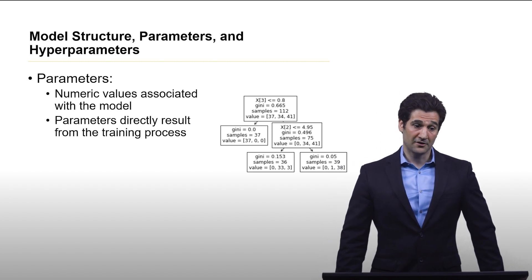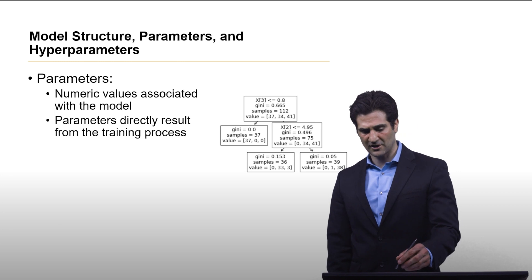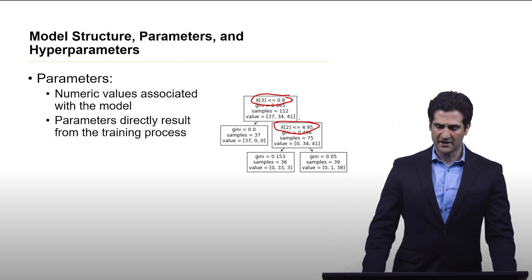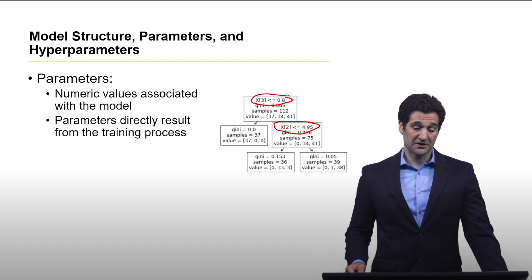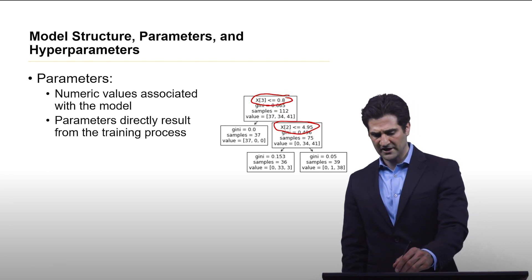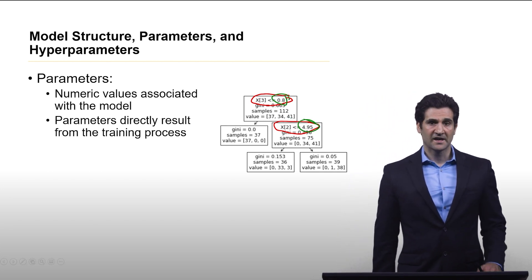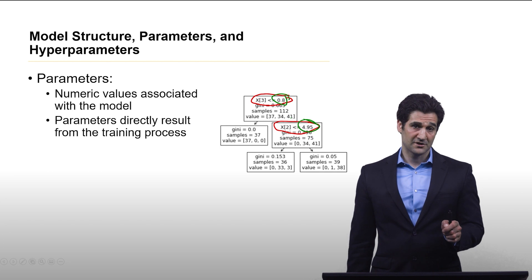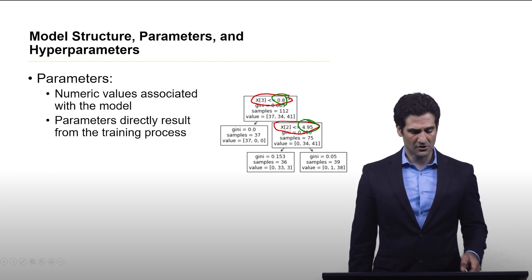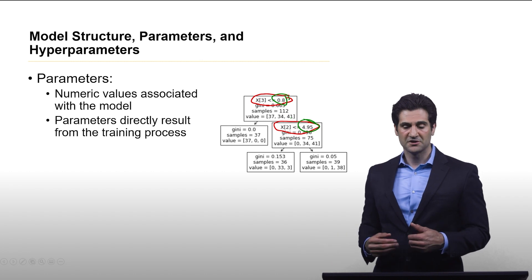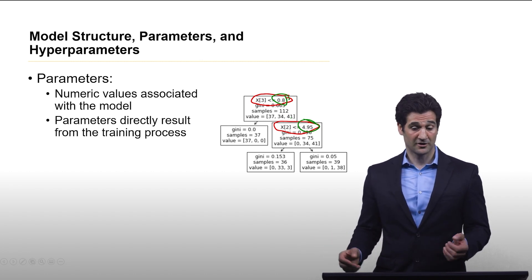Associated with the model are what are called parameters. Here the parameters are, at each split of this decision tree, it's looking at a different measurement. What I've circled are x3. It's looking at the third measurement being less than or equal to 0.8. x2 is looking at the second measurement being less than or equal to 4.95. That 0.8 and that 4.95, that comes from the training process. Those are parameters that are being learned from the historical data.